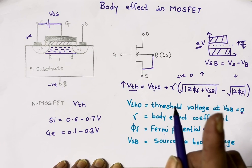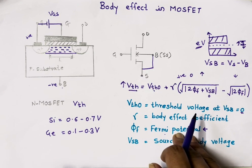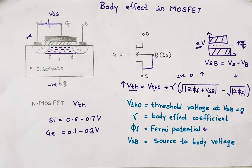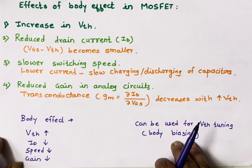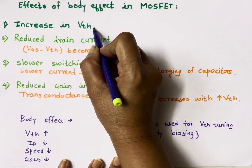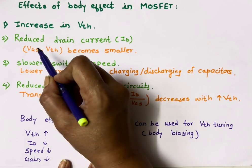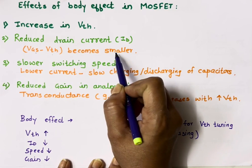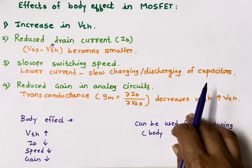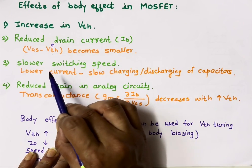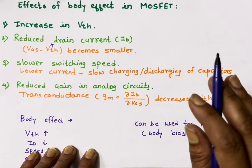In MOSFET, when body and source are not at the same potential, threshold voltage increases. When threshold voltage increases, drain current decreases because VGS − VTH becomes smaller. This is why drain current reduces. When drain current reduces, switching speed also reduces — lower current means slow charging and discharging of capacitors, so speed decreases.